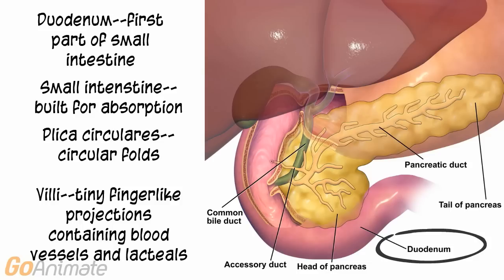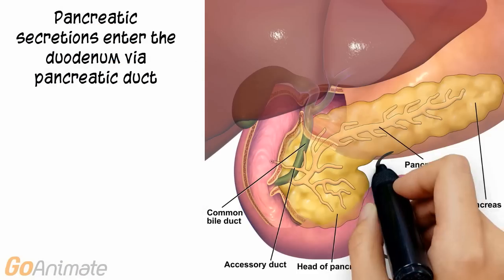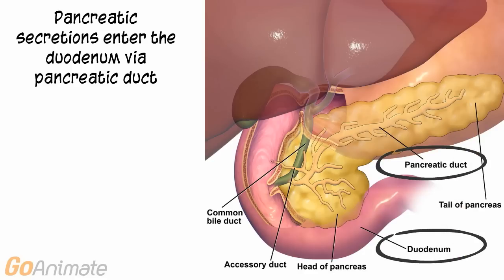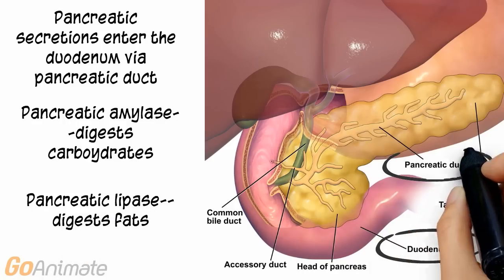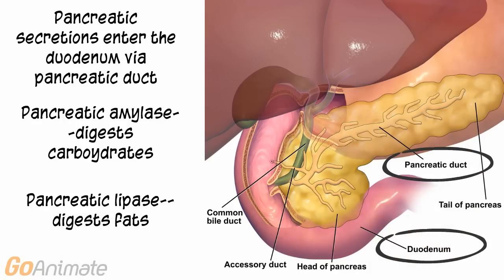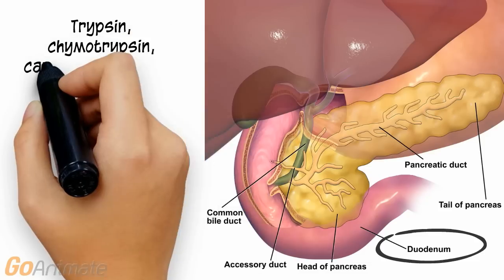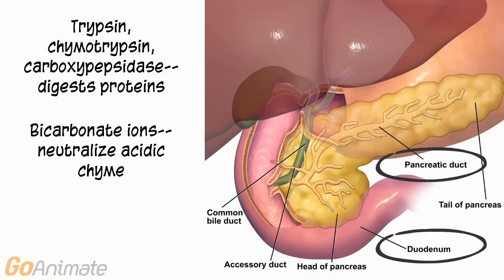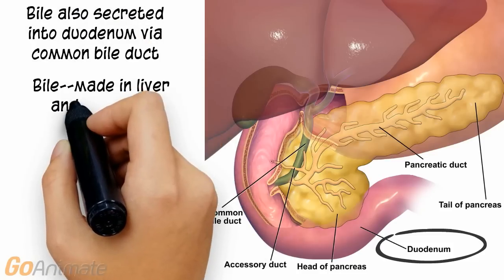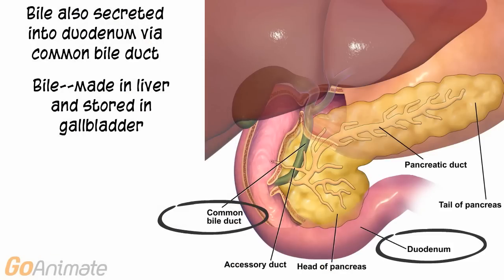The pancreas also secretes substances into the duodenum via the pancreatic duct. These include pancreatic amylase for carbohydrate digestion, pancreatic lipase for fat digestion, and trypsin, chymotrypsin, and carboxypepsidase for protein digestion. Bicarbonate ions are also secreted by the pancreas to neutralize the acidic chyme from the stomach, as the digestive enzymes work better under more alkaline conditions.